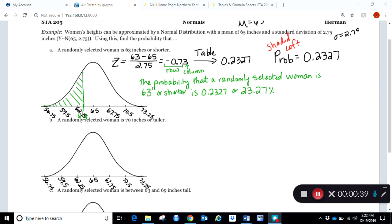The same one that we already had. This time we're being asked to find the probability that a randomly selected woman is 70 inches or taller.